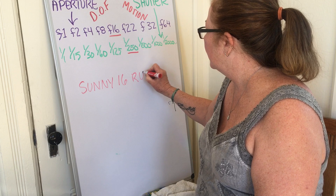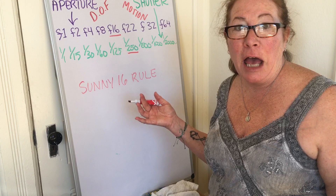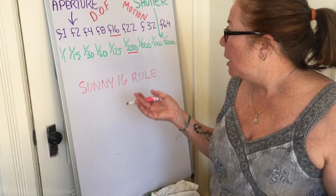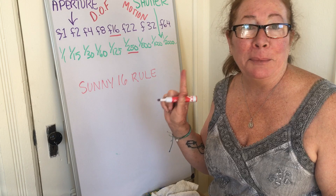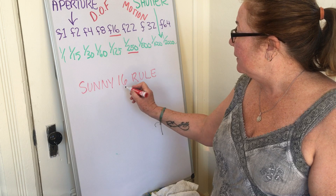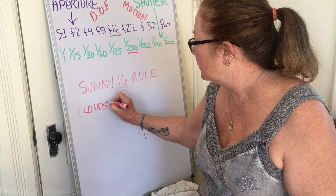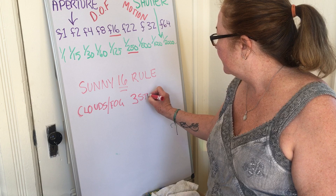You can use the Sunny 16 rule to photograph in many different lighting conditions. For example, if you live somewhere foggy and cloudy like Salinas or the south valley with marine layer, the f/16 and 1/250th is just your starting point. For a cloudy or foggy day, you need to put in three stops more light.